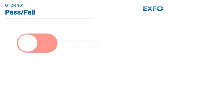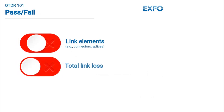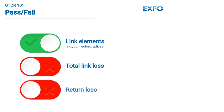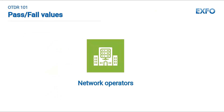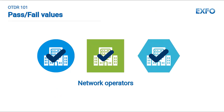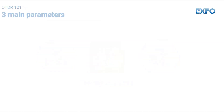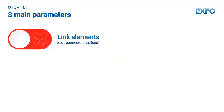Pass-fail thresholds should always be applied before testing to avoid post-processing manipulations. Pass-fail values can be determined internally by the engineering team or be required by the link's owner or user. These values can be operator-specific or derived from standards like TIA or IEC when deploying certain services on the link. The OTDR user needs to know which value or standard applies for the right pass-fail settings. There are three main parameters that need to be validated against a pass-fail threshold.